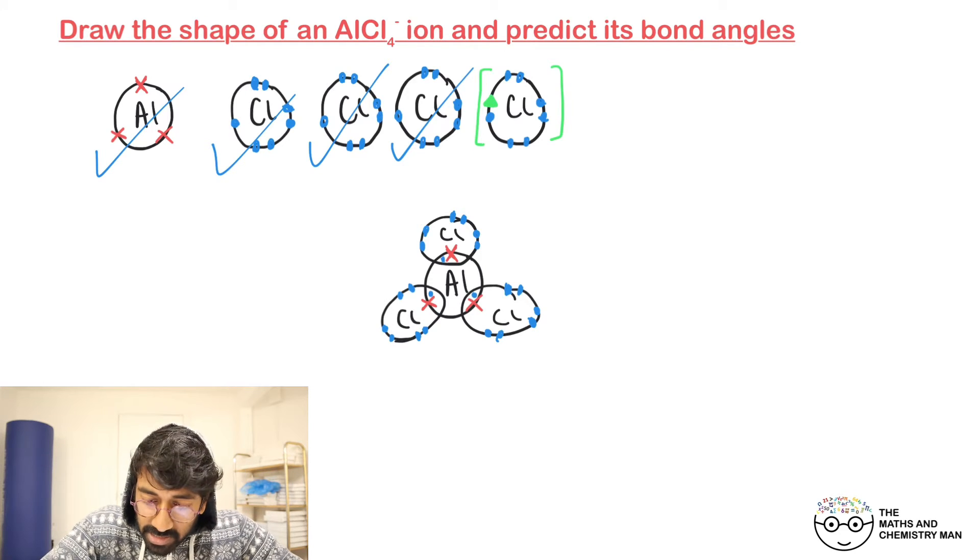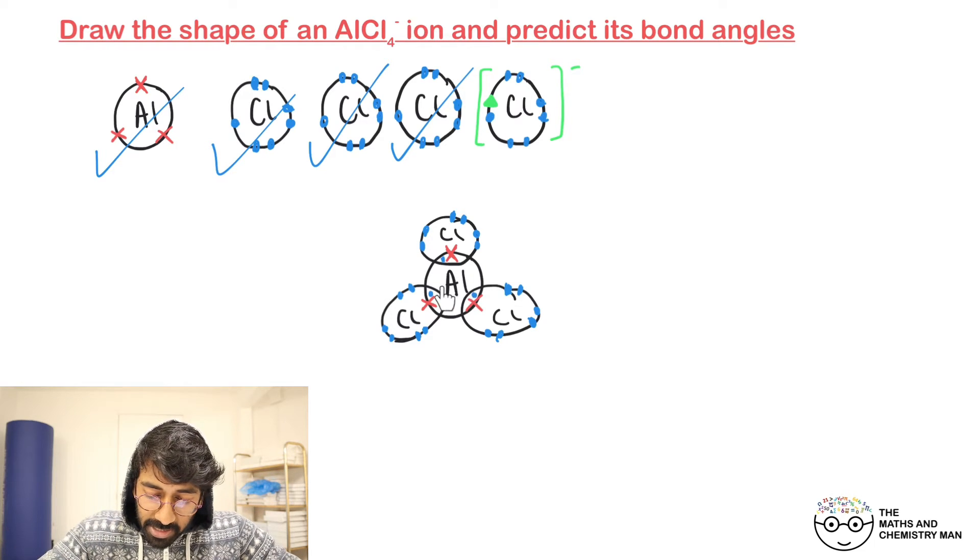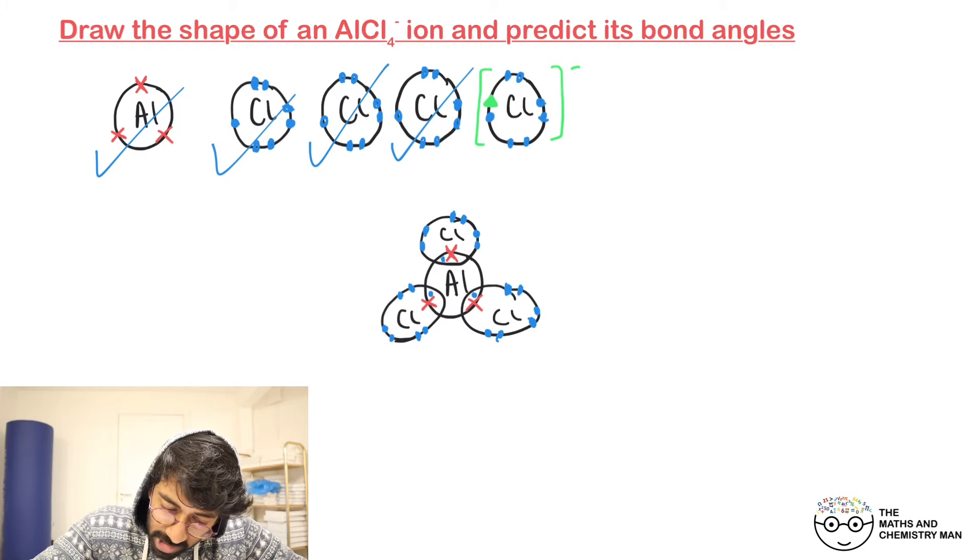The aluminium has no more electrons it can share, so what does this do? The chlorine actually gives both of its electrons to form a bond to the aluminium.